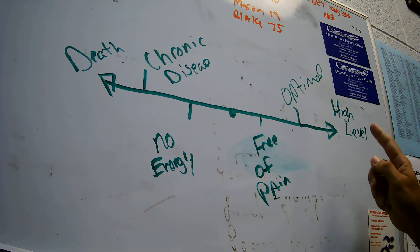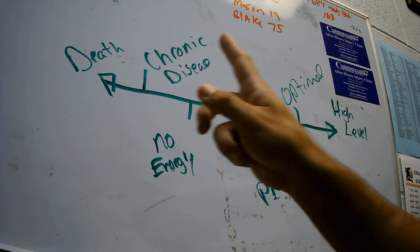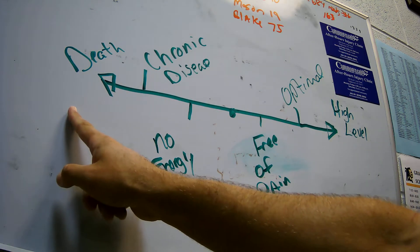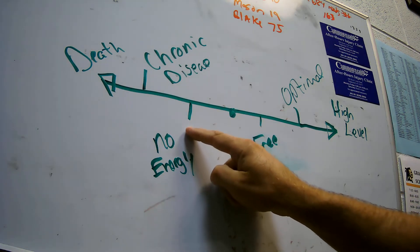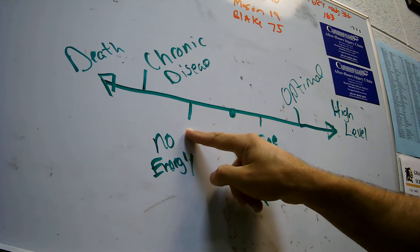On one end, there is the high level of health. On the other end, there is death. If you look at the side going towards death, the first bullet is no energy. This is where people go throughout the day and always feel tired, sluggish, feel like something's wrong with them.